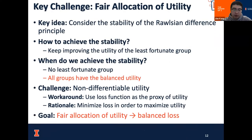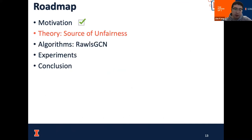The least fortunate group in the graph is the group of nodes with the worst utility. To enforce the Rawlsian Difference Principle, we aim to understand its stability. A natural way is to keep improving the utility of the least fortunate group until there is no least fortunate group, meaning all groups have balanced utility. However, many utility measures like classification accuracy or F1 scores are not differentiable and may not fit into the end-to-end training paradigm of GCN. So we use the loss function as a proxy measure of utility, and our goal becomes balancing the loss of nodes with different degrees.